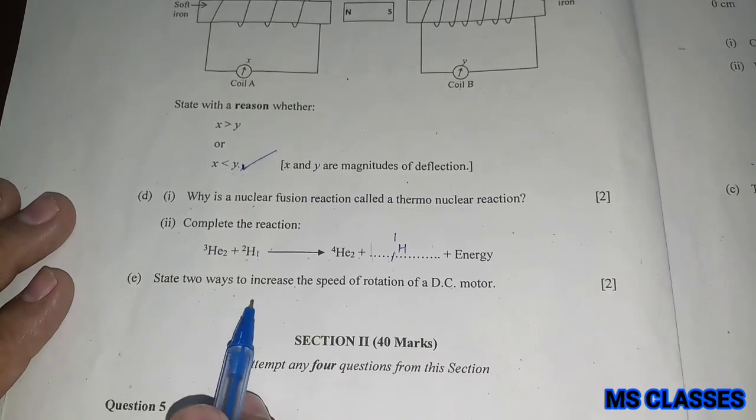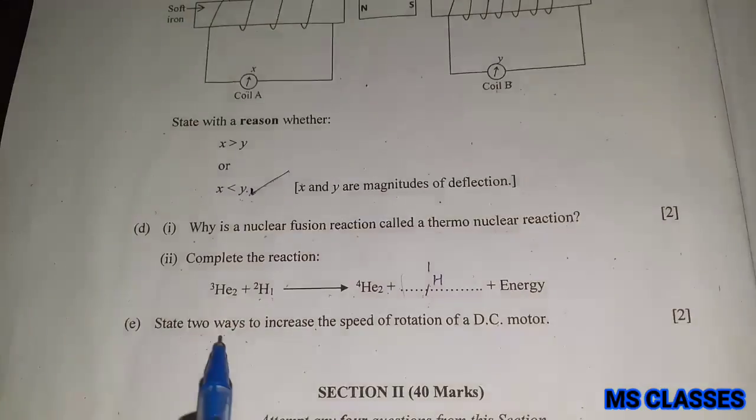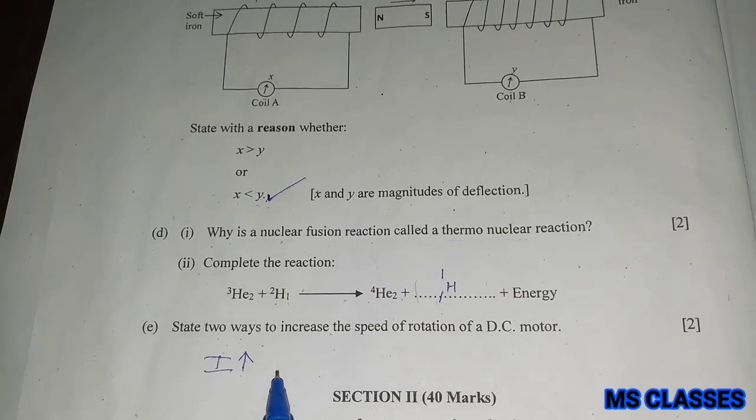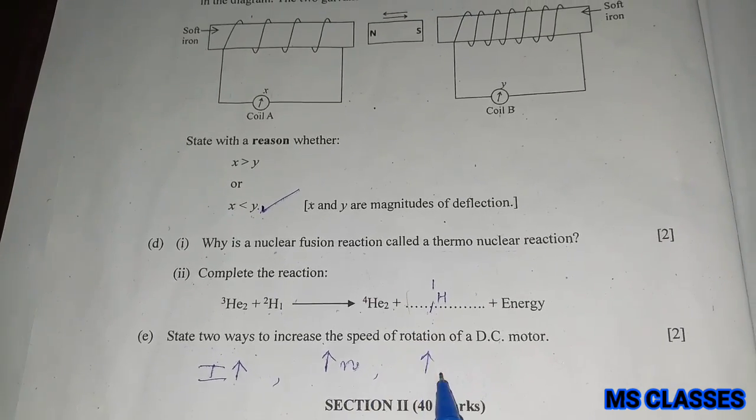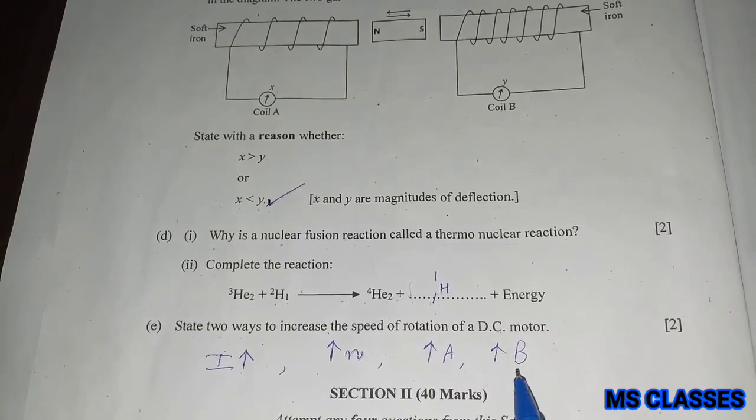State two ways to increase the speed of rotation of a DC motor. We can increase either by increasing the strength of current, or by increasing the number of turns, or by increasing the area, or by increasing the magnetic field.